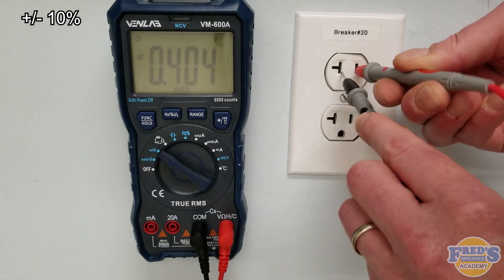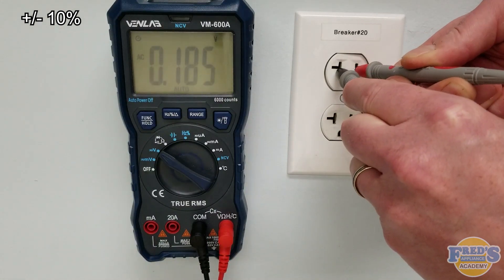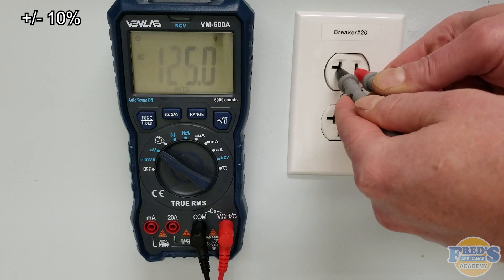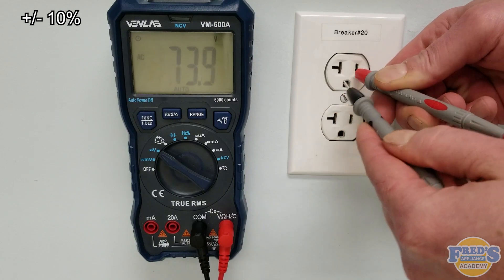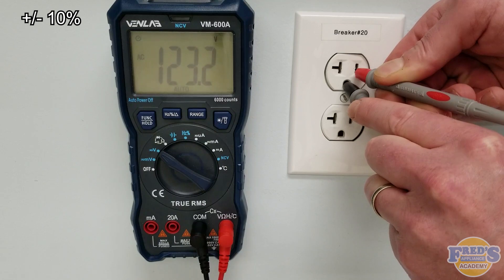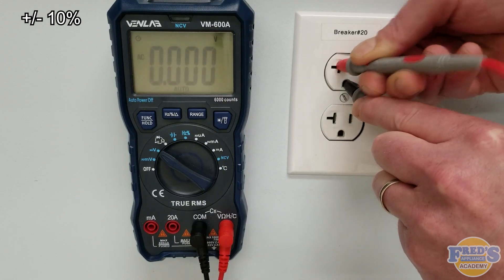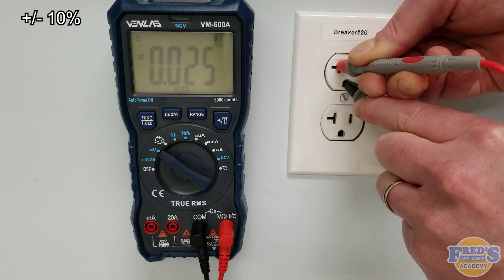We're going to go ahead and put our meter leads in hot and then neutral where we should be getting 120 volts. Next, remove it from the neutral and go to ground where we get 120, and then we go from neutral to ground where we should get nothing.